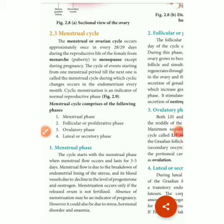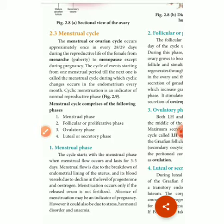Before that menstrual disorder, first we need to know what is the menstrual cycle or menstruation. The menstrual or ovarian cycle occurs approximately once every 20 to 29 days during the reproductive life of a female. It occurs from menarche to menopause, except during pregnancy — the menstrual cycle is taking place in the female reproductive body. Due to some difficult conditions, some disorders happen in the female menstrual cycle.